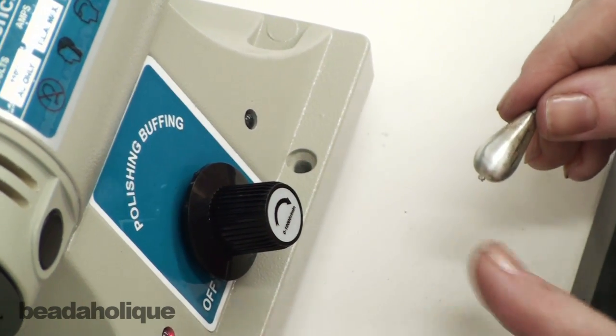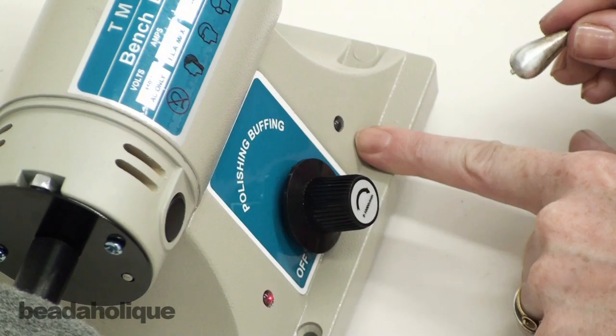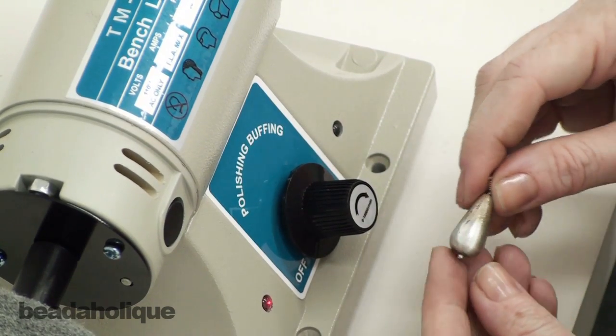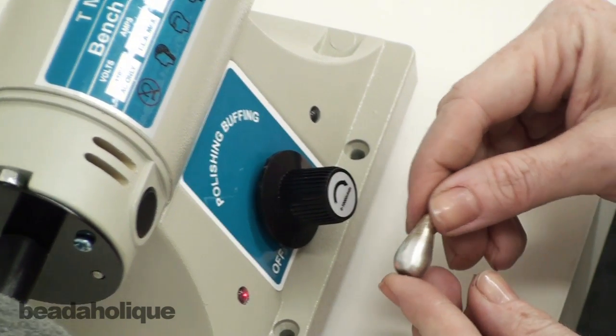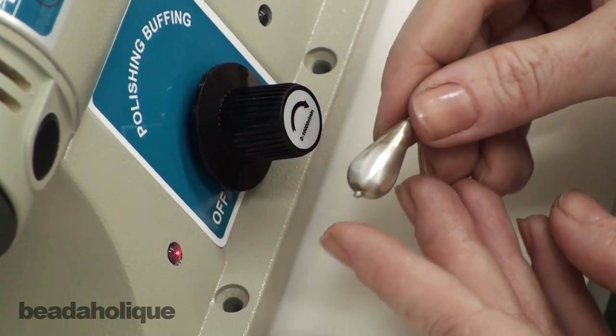You'll also notice when it was plugged in but not turned on, we had the red light, and then when we had it turned on, we also had that blue light. So there you go. You can see it's quite a dramatic result without very much effort or strain. Very easy to use bench top polisher.